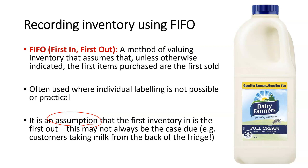One reason why this might be considered an assumption: think about the example of milk. When we go to a supermarket, supermarkets arrange their milk fridges according to FIFO — they put the oldest milk at the front and the newest milk at the back, wanting customers to take the older milk first. But what do a lot of people do? They go to the back of the fridge and take the one with the longest expiry. So that's a good example of why this is an assumption — we stack shelves according to FIFO, but it doesn't mean that's what customers actually take.